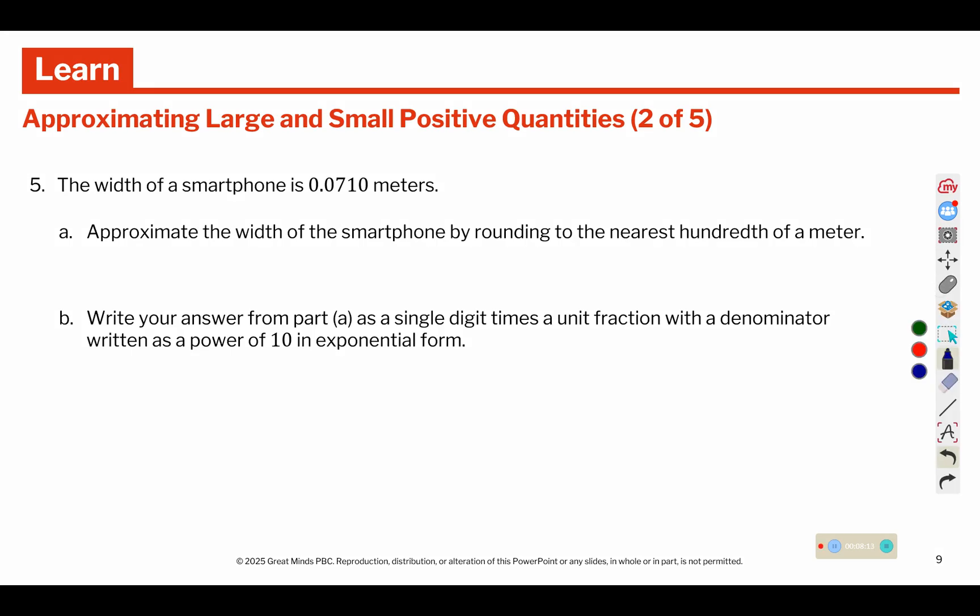Approximate the width of a smartphone by rounding to the nearest hundredth. Is this closer to 7 hundredths or 8 hundredths? The 1 leaves it, so it is 7 hundredths, which is 7 times. This one is going to be a fractional power of 10. And it's 2 place values difference, so it's going to be a 2. You can also think of it as 100 as 2 place values after the 1, so it has 2 as its exponent.